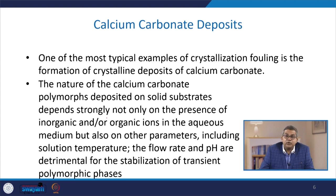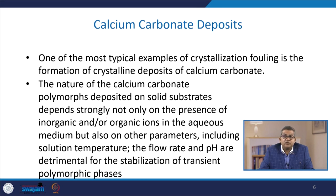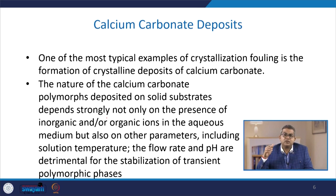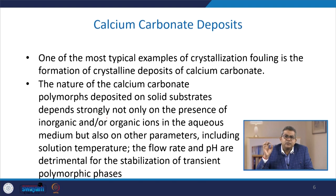One of the most typical examples of crystallization fouling is the formation of crystalline deposits of calcium carbonate. The nature of calcium carbonate polymorph deposits on a solid substrate depends strongly not only on the presence of inorganic or organic ions in the aqueous medium, but also on other parameters like solution temperature, flow rate, and pH, which are determinantal for the stabilization of transient polymorphic phases.